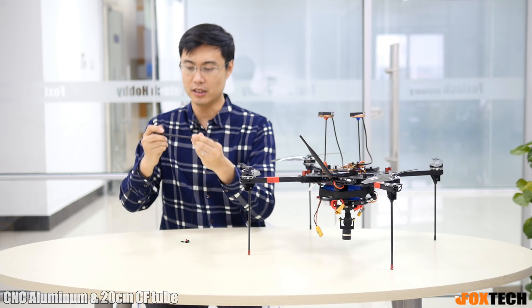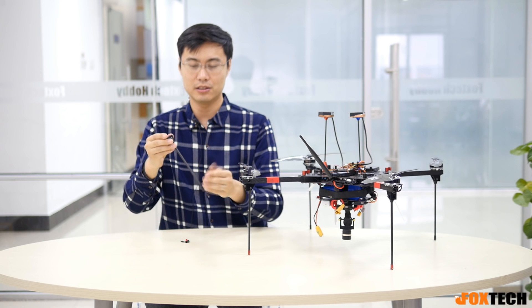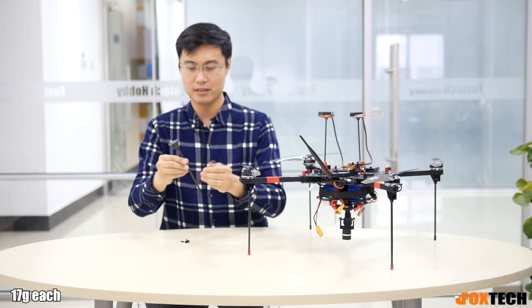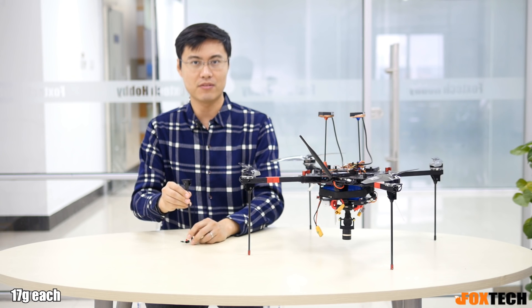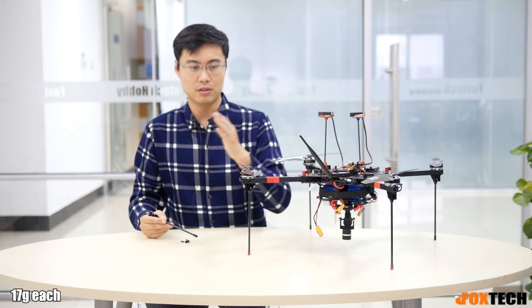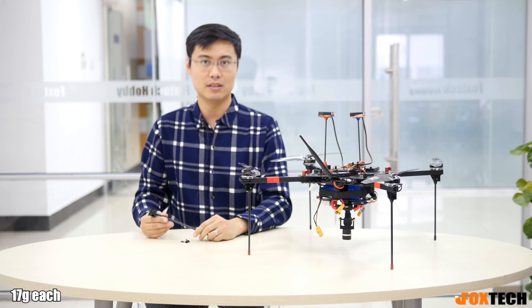The whole system is incredibly stable and durable and also surprisingly light. Each side only weighs around 17 grams, so adding four of them, your quadcopter will be only added around 70 grams.